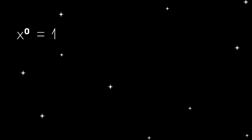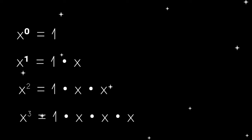Automatically, x raised to the power of 0 equals 1. X raised to the power of 1 equals 1 times x. X raised to the power of 2 equals 1 times x times x. X raised to the power of 3 equals 1 times x times x times x, and so on and so forth.